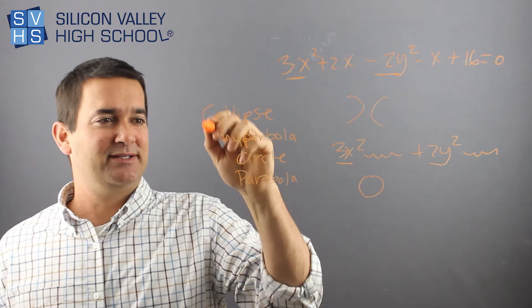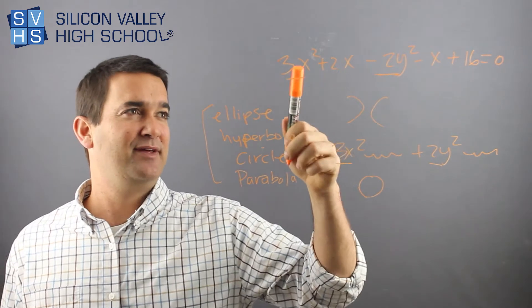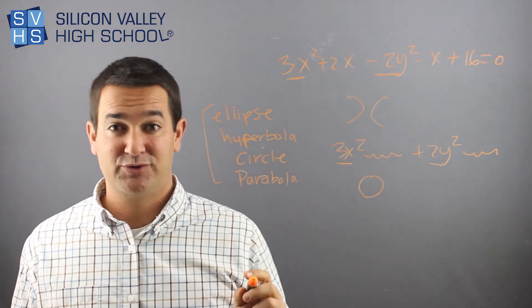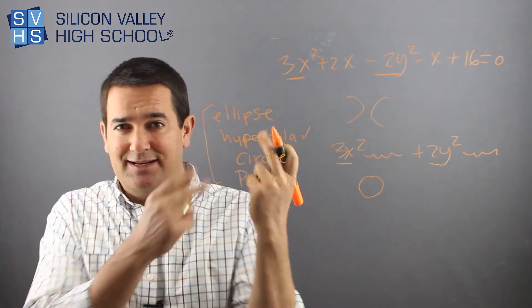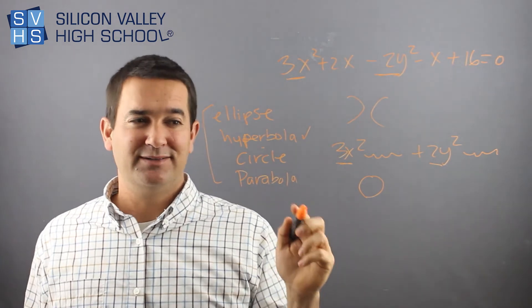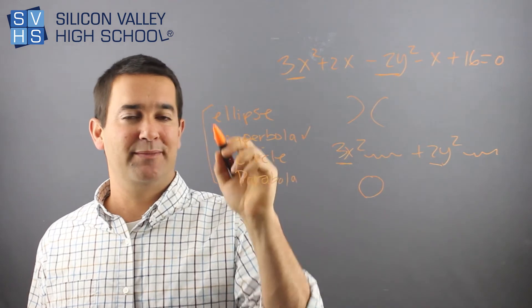So between these options, immediately you can tell that if the x squared and the y squared are subtracted, it's a hyperbola. The two halves are being subtracted. If they're added, you're still down to either a circle or an ellipse, right?